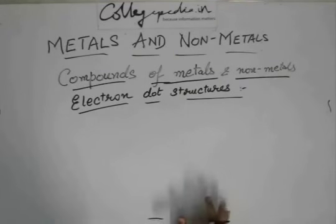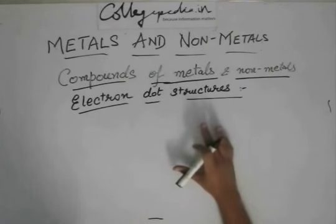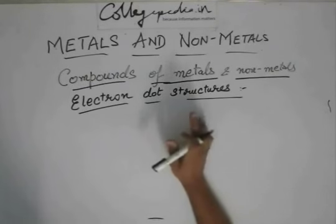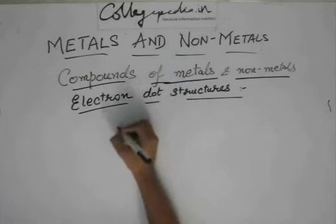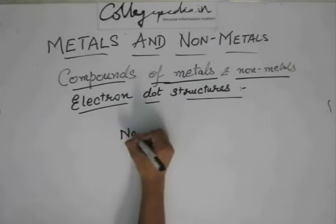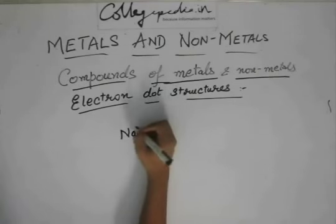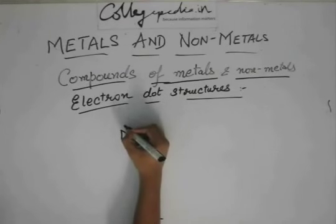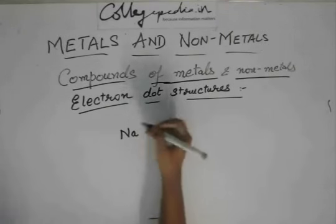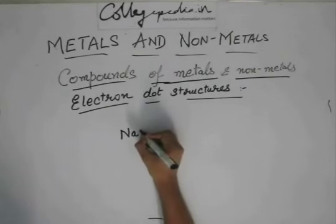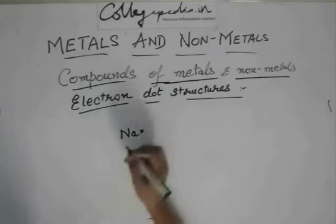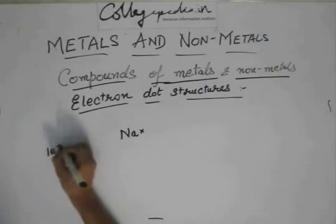What they will ask you is that describe the formation of sodium chloride with the help of electron dot structure. So, what are electron dot structures? They are basically the structures of these elements where the electrons in the outermost orbit are shown by crosses and dots. So, we have a cross over here because sodium contains only one electron in its outermost orbit.